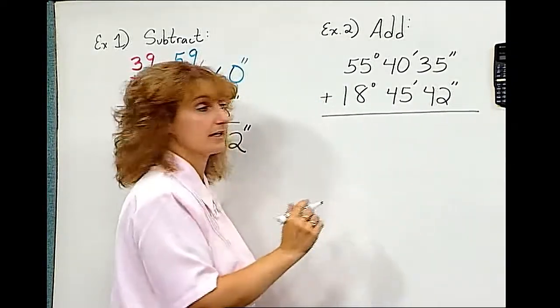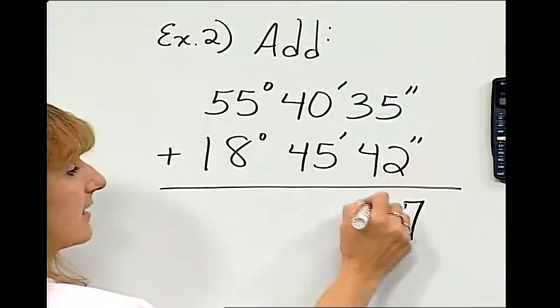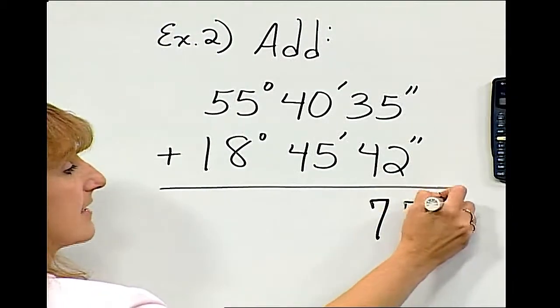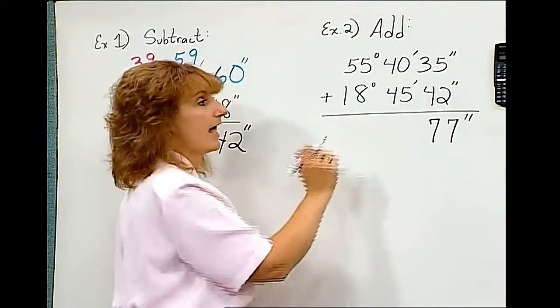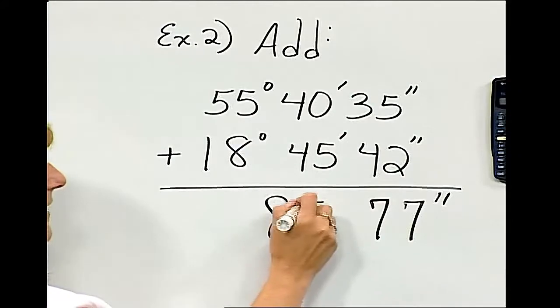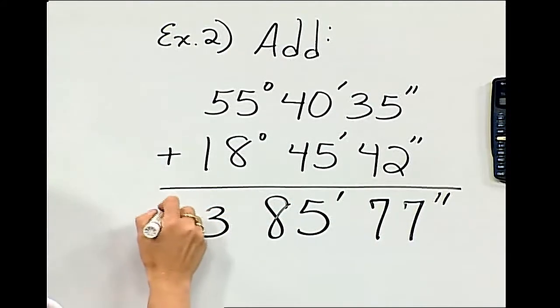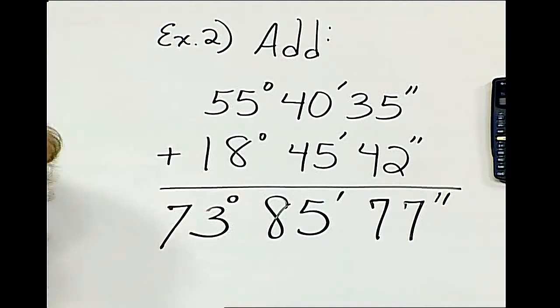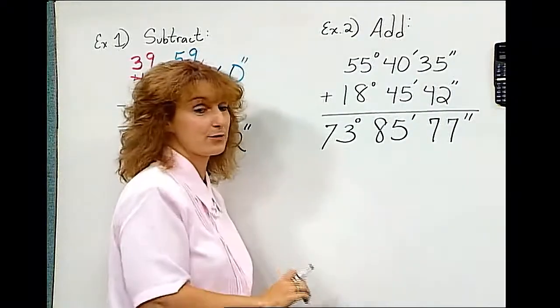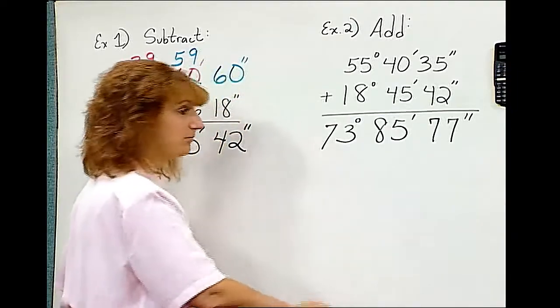Let's start with seconds. I add my seconds. I get 77 seconds. I add my minutes. I have 85 minutes. And I add my degrees. And I get 73 degrees. You might think we're done. But there's a problem here.